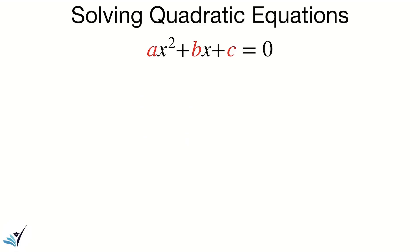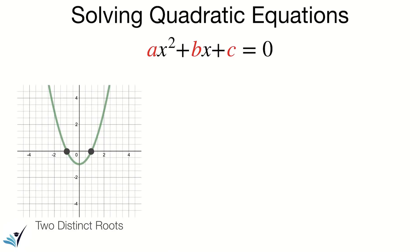There are three possibilities in terms of the number of roots that you can find. The first possibility is when the parabola has two distinct intersections with the horizontal axis. In that case, if you solve the quadratic equation you would get two distinct roots or two distinct answers.